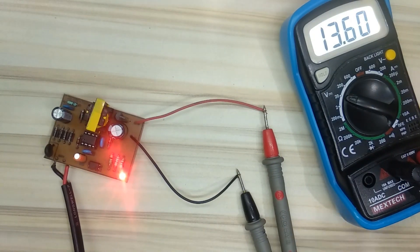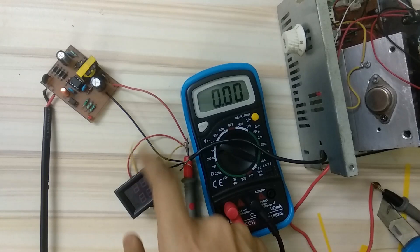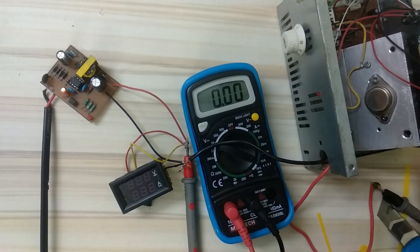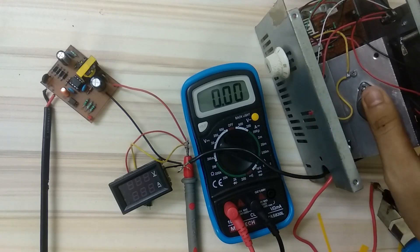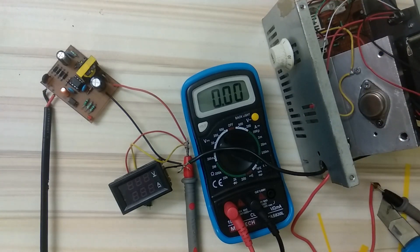Now let's try it with a load. This is my setup. This meter will show the output voltage and this will show the output current. And this is my 150 watt electronic load. So now let's turn on the circuit.